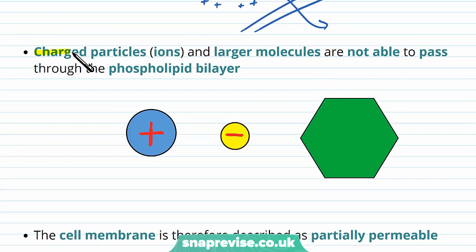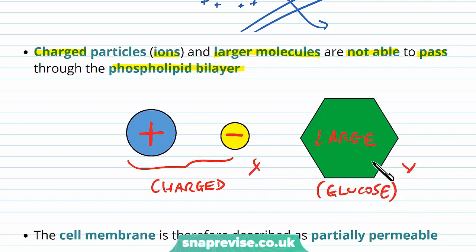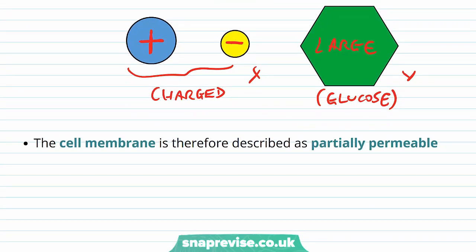But any particles which are charged, so these would be ions like sodium, potassium, and any larger molecules like glucose would not be able to pass through the bilayer. So any charged particles and also large particles like glucose, neither of these can get through the membrane. So this is why we describe the cell membrane as being partially permeable because it only allows certain things to pass through diffusion. These things can get into the cell via other methods but it is not through diffusion.